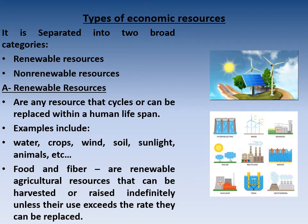Types of economic resources: all resources have two main categories — renewable and non-renewable. Renewable resources are any resource that cycles or can be replaced within a human life span — يعني يُعاد استخدامها أو إحلالها خلال العمر البشري. For example, petroleum is recycled but it needs thousands of years, so it is not related to the human life span. Examples of renewable resources: water, crops, wind, soil, sunlight, animals.